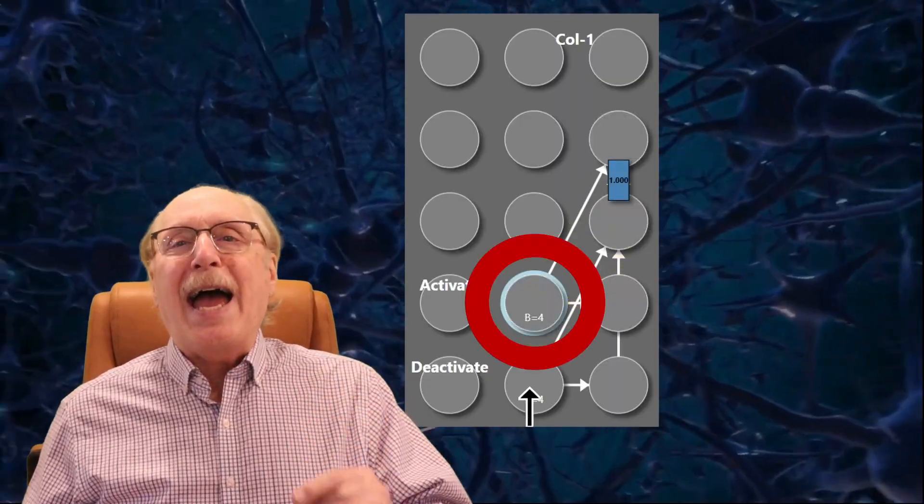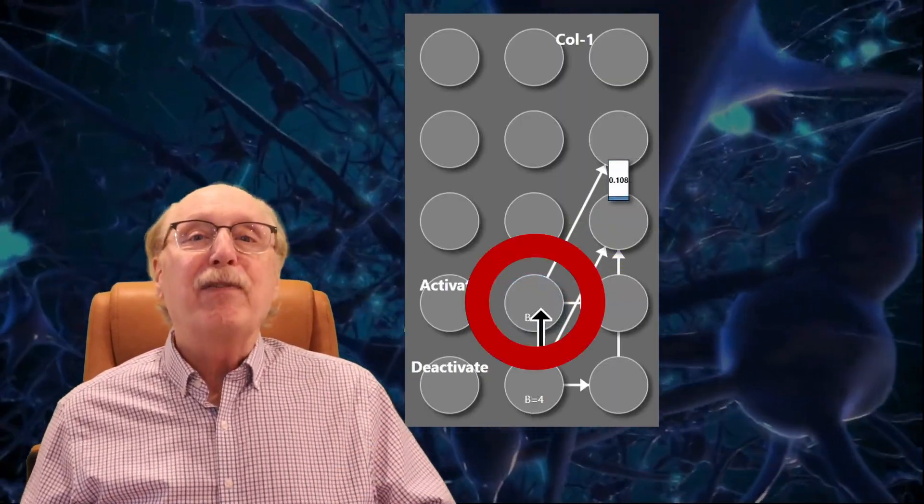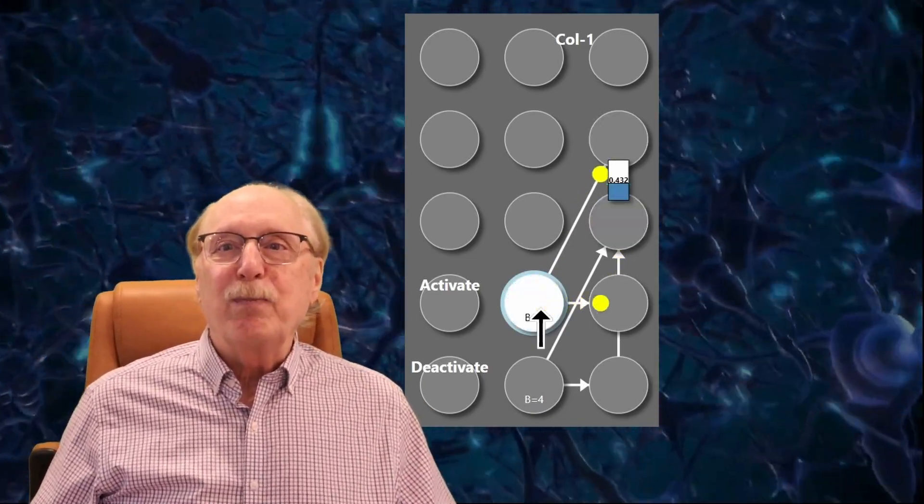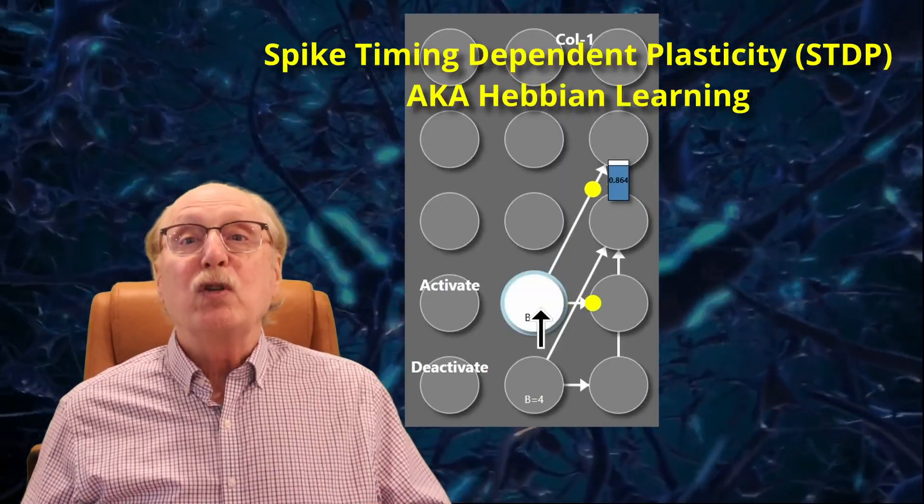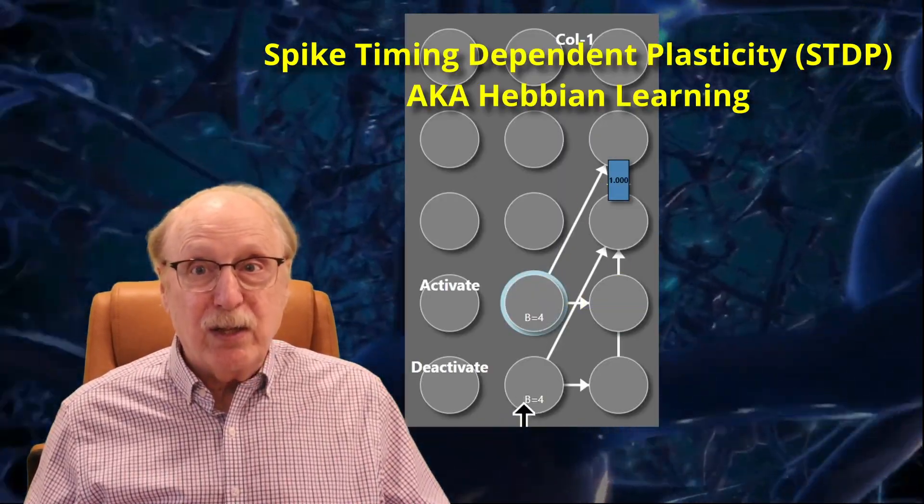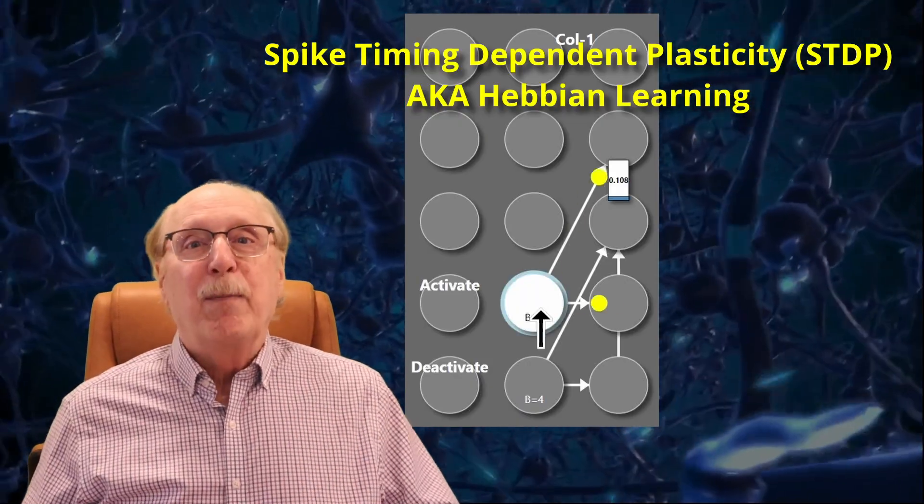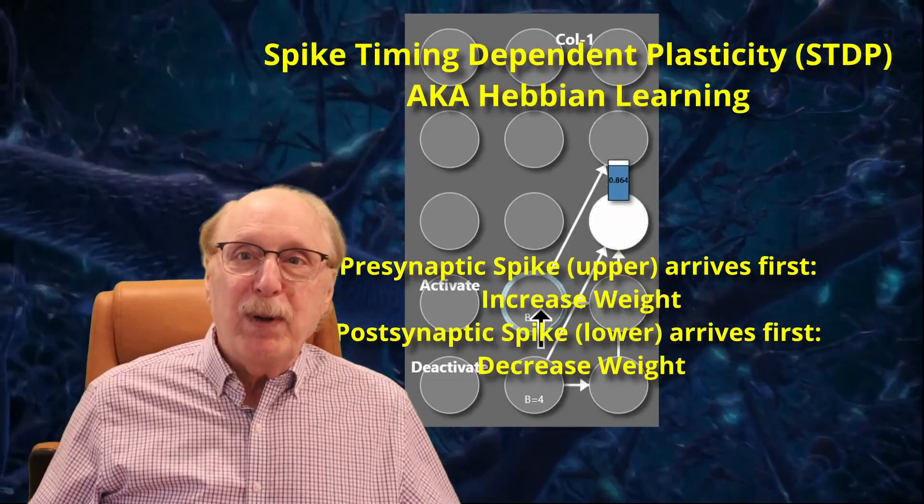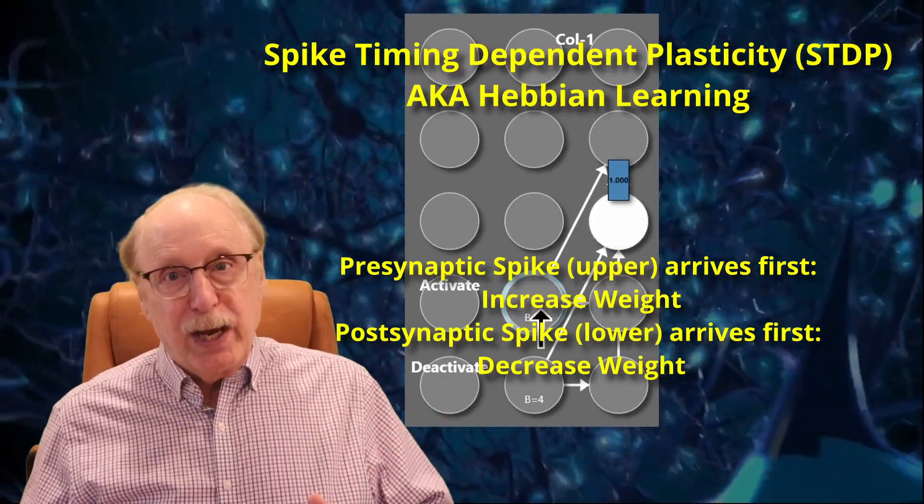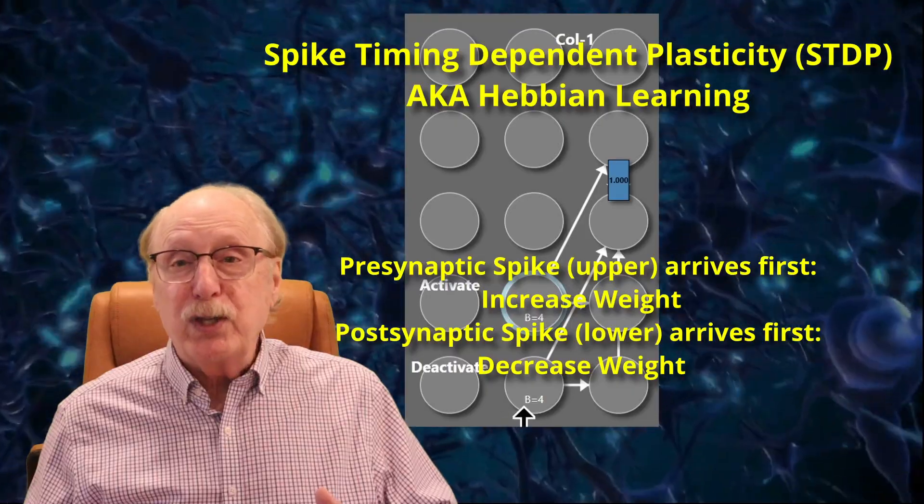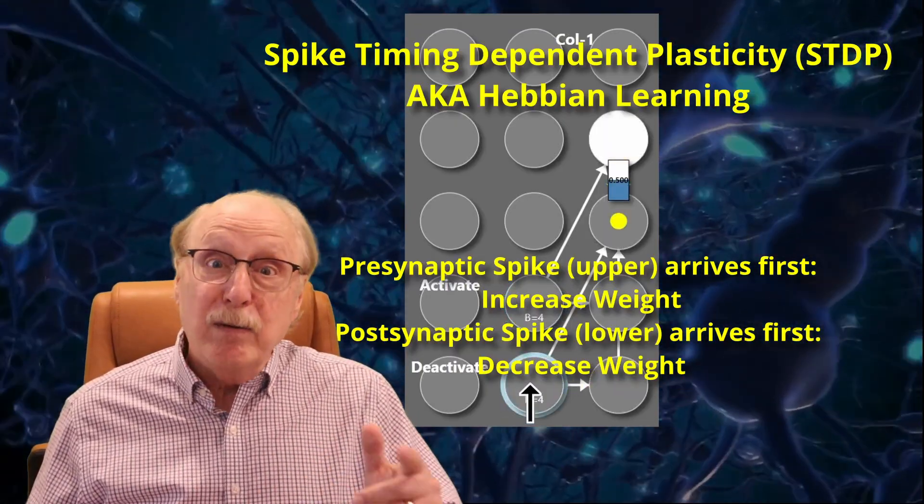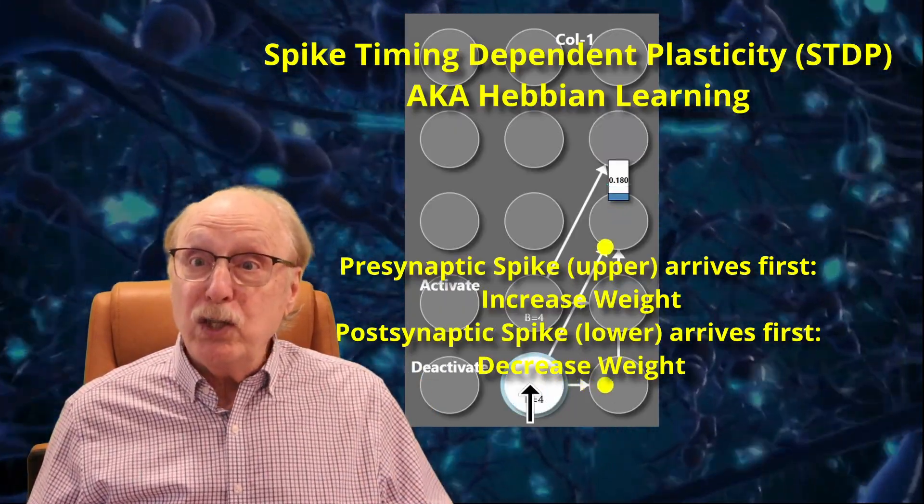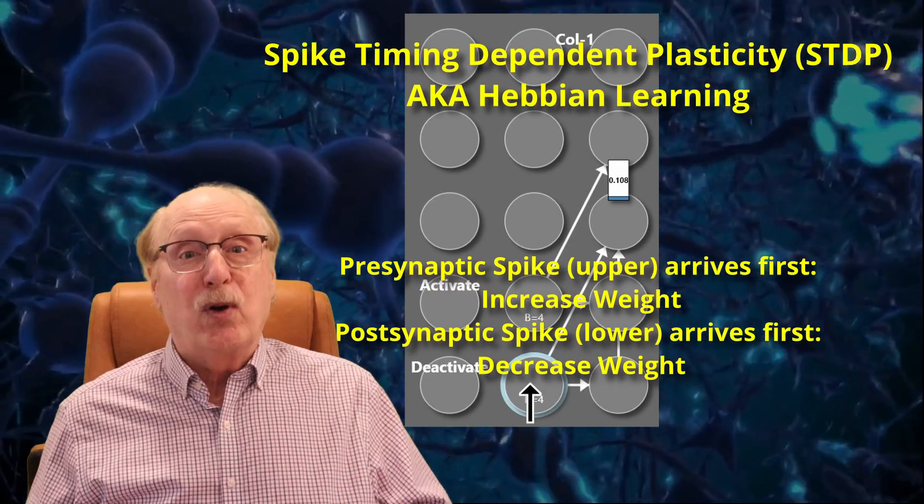We introduce the activate neuron. It fires a burst of four spikes. Thanks to well-timed connections at both ends of the synapse, those spikes apply Hebbian learning rules to set the weight to one, marking the column as in use. You may remember the Hebbian rule: if the pre-synaptic spike comes before the post-synaptic, the synapse is strengthened. If it comes after, it's weakened. The rule gives us a biologically realistic way to turn our columns on and off.